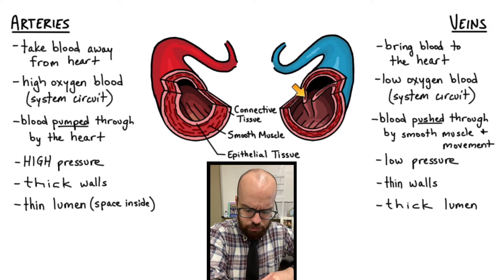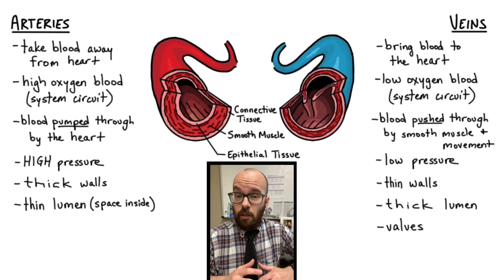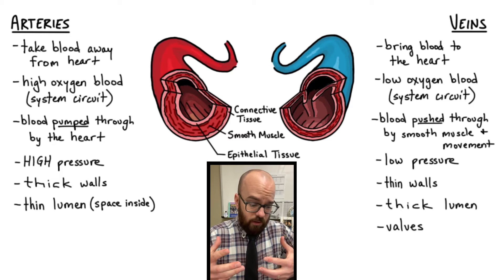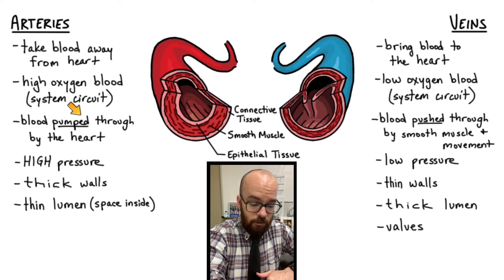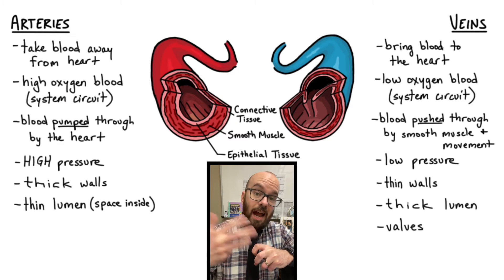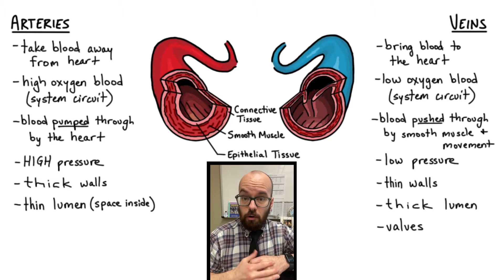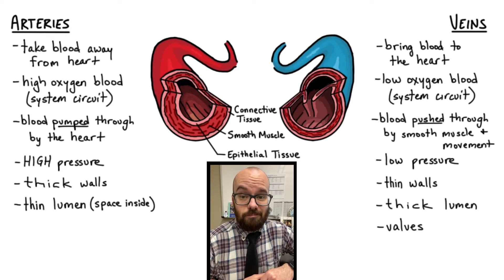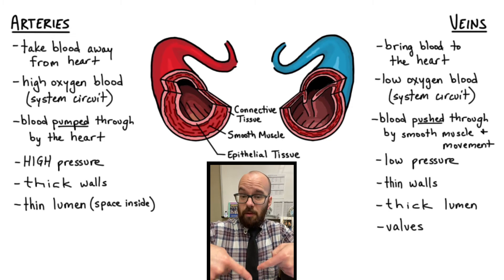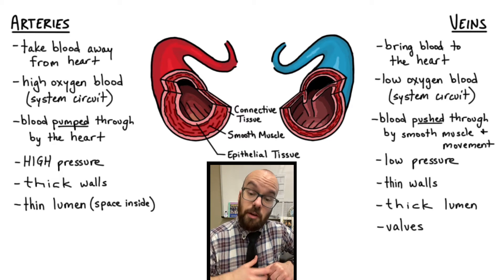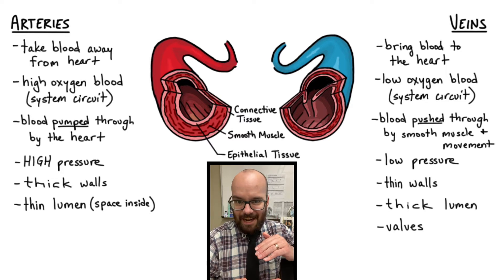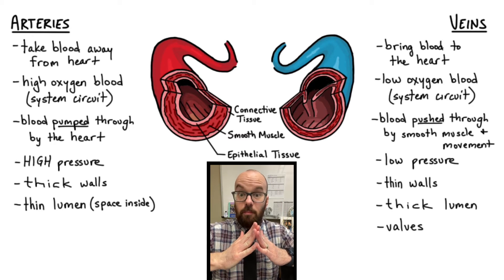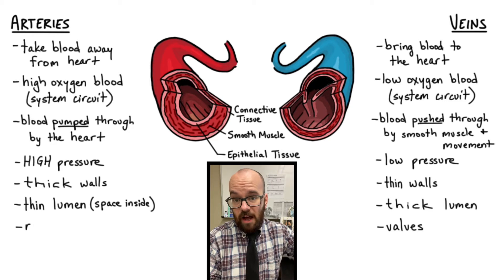Another difference is that veins have valves, which allow blood to flow one way but not the other. Why do veins need valves but arteries don't? Because the heart pumps through arteries at such high pressure there's very little chance of blood flowing backward. In veins, however — like the veins in our legs bringing blood upward against gravity at low pressure — we need one-way valves to ensure any progress blood makes isn't negated by backward flow. So veins have valves; arteries do not.